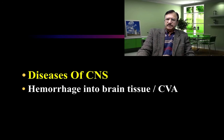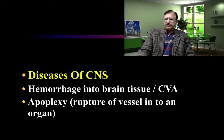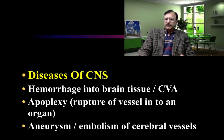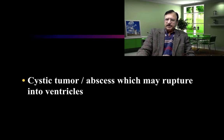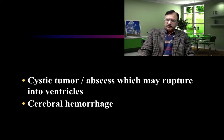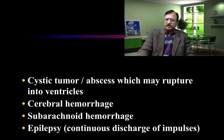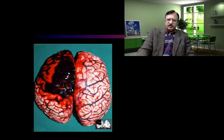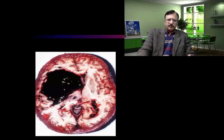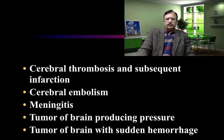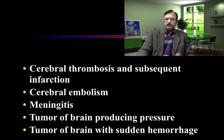Diseases of the central nervous system include hemorrhage into the brain tissue — cardiovascular accidents — apoplexy, that is rupture of a vessel into an organ such as the brain tissue, aneurysm or embolism of the cerebral vessels, cystic tumours, abscesses which may rupture into the ventricle, cerebral hemorrhage, subarachnoid hemorrhage, and epilepsy — continuous discharge of impulses which leads to epilepsy. This is an extradural hemorrhage and this is the hemorrhage within the brain tissue. There can also be cerebral thrombosis, subsequent infarction, cerebral embolism, meningitis, and tumours of the brain producing pressure or sudden hemorrhage.